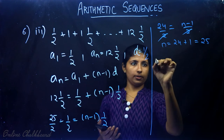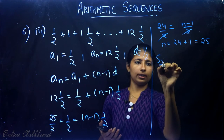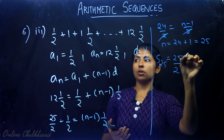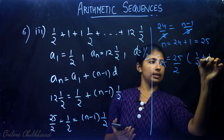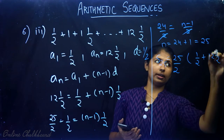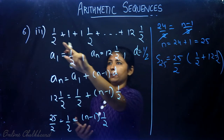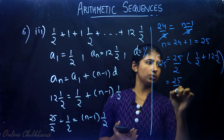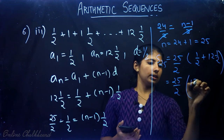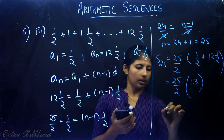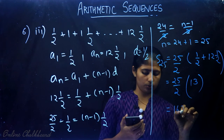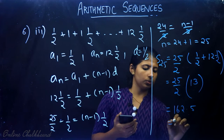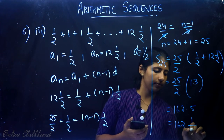With n equals 25, we calculate S25 equals 25 divided by 2 times (first term plus last term) equals 25 divided by 2 times 13, which gives 162.5, that is 162 and a half.